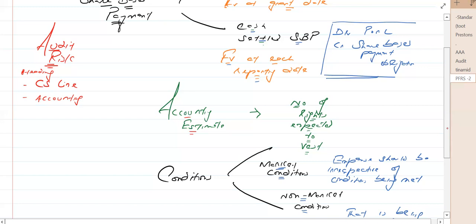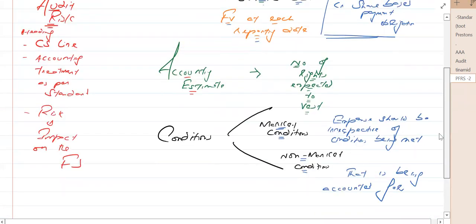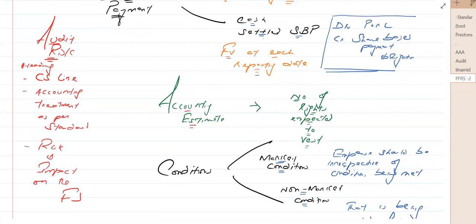However, if an exam question only states that the company gave share options to 100 directors and the company is not sure how many directors will stay, then you write according to IFRS 2 that the expense should be recorded based on the number of rights expected to vest, calculated based on how many directors will stay for the required number of years. In that case, there is a risk that the company's accounting estimate may be incorrect, resulting in incorrect expense and equity being recorded.